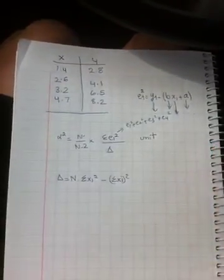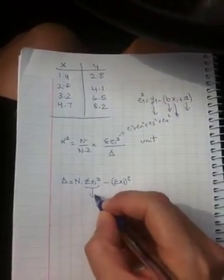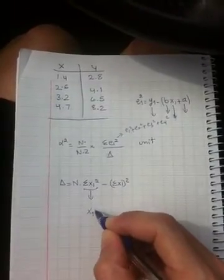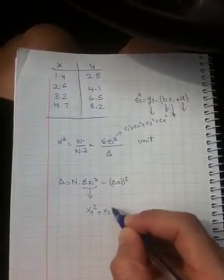Now concerning delta, what does this mean? It means it's x1 squared plus x2 squared.